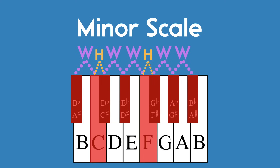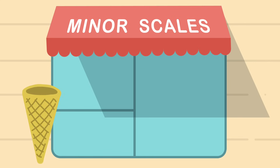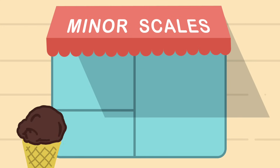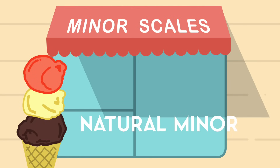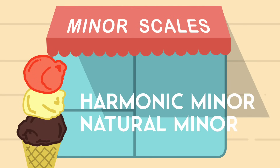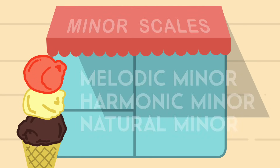I mentioned earlier that we were looking at the natural minor scale. That's because minor scales come in three different flavors: natural, harmonic, and melodic. But that's a topic for another video.